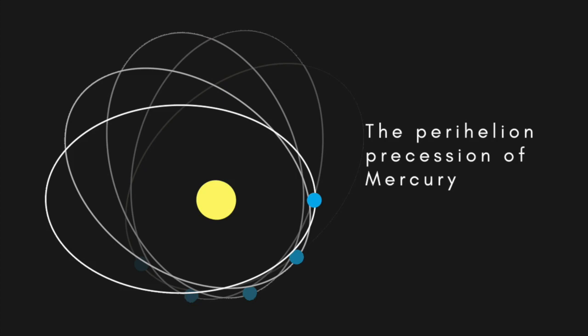Among predictions of General Relativity which have been borne out by observation are the advance of the perihelion of Mercury, the bending of light in a gravitational field, the spin-down of pulsars due to the emission of gravitational waves, and that time runs more slowly in strong gravitational fields.